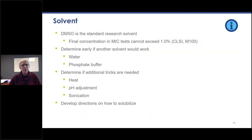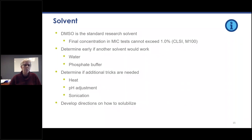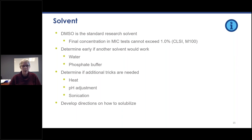DMSO is the standard research solvent. The final concentration of DMSO in MIC tests cannot exceed 1%. It's useful to determine early if another solvent would work; the best solvents are water and phosphate buffer. Determine if additional techniques are needed to get your compound into solution — heat, pH adjustment, sonication. It's useful to develop directions on how to solubilize the compound so that it can be consistently done both internally and externally in testing.